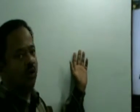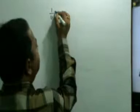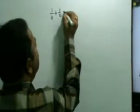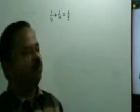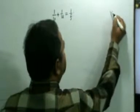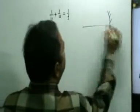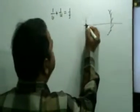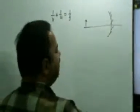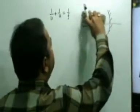We apply the mirror formula: 1/v + 1/u = 1/f. Now we have a linear object.